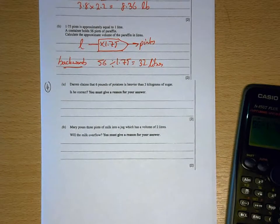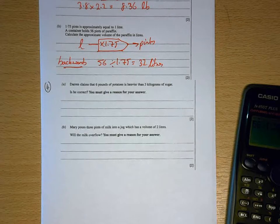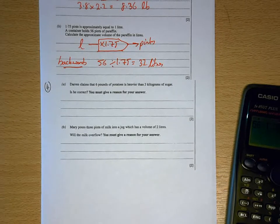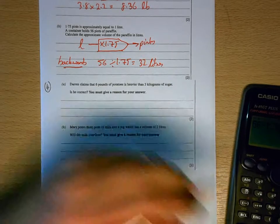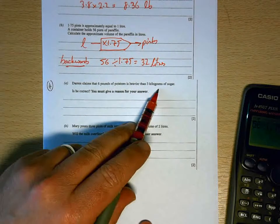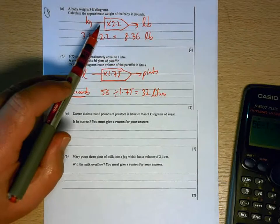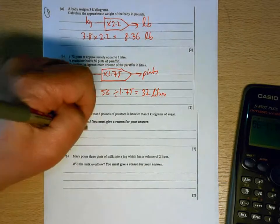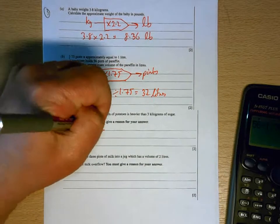Question four: Darren claims that six pounds of potatoes is heavier than three kilograms of sugar. So again, what we're doing here is comparing pounds and kilograms, so this is our relationship here. So our number machine into pounds.